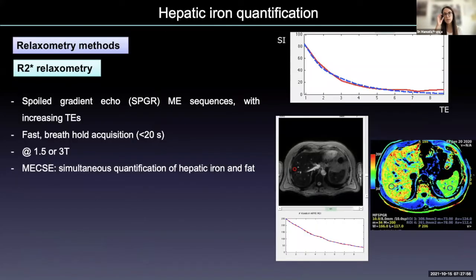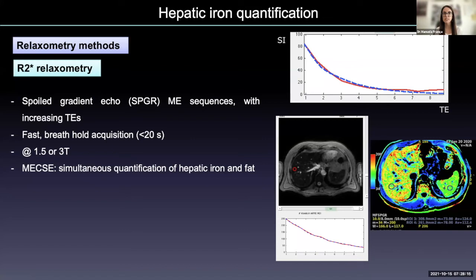How can we quantify iron? The most used MR technique for iron quantification is relaxometry. As mentioned when discussing multi-echo sequences, we can measure the rate of T2* signal decay — called R2* — to measure iron, because R2* is directly related with the liver iron concentration. We acquire multi-echo sequences with increasing TEs; these sequences are very fast and we can image the whole liver during one single breath-hold acquisition at 1.5 or 3 Tesla.